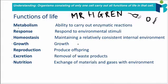Growth is pretty straightforward — things have to be able to grow from small to large. Reproduction means you have to be able to produce offspring. Because all cells come from pre-existing cells, if a cell can't produce offspring, is it really living? Not really.